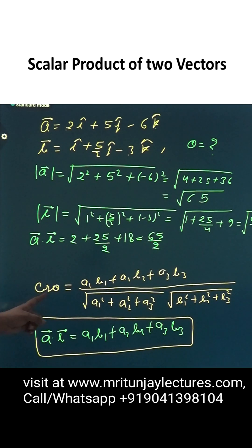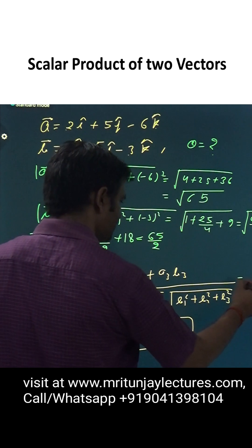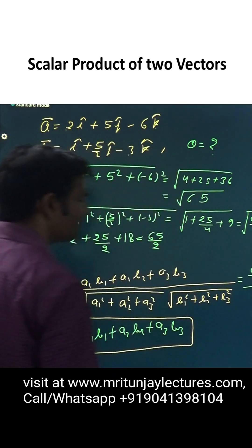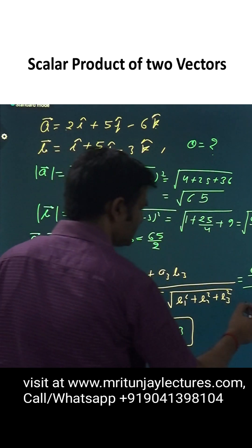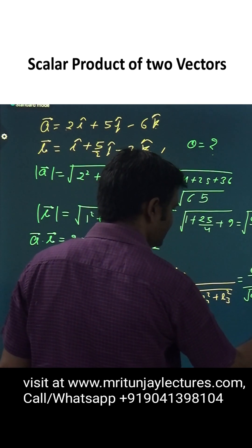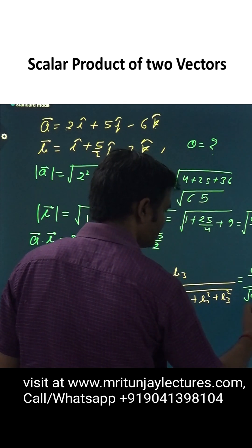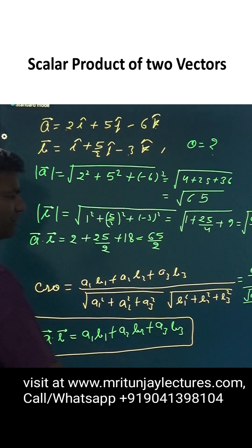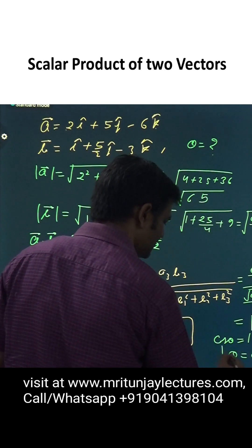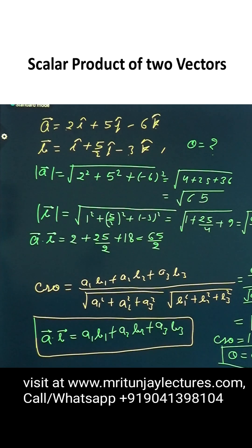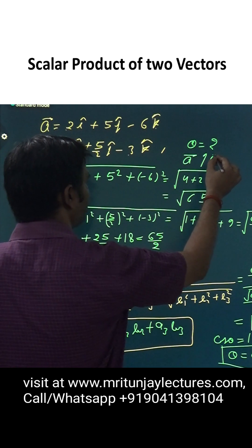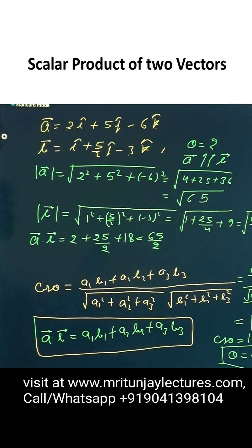Putting it into the cos theta formula — numerator is 65/2, denominator is mod a into mod b which is under root of 65 into under root of 65/4, giving 65/2. So cos theta equals 1, which means theta is 0 degrees. Finally, the angle between vector a and vector b is 0, meaning both vectors are parallel.